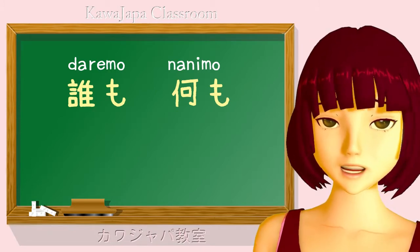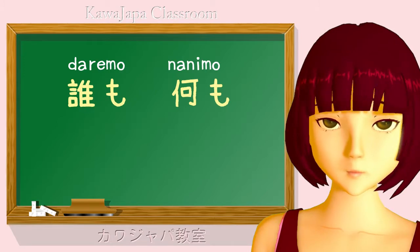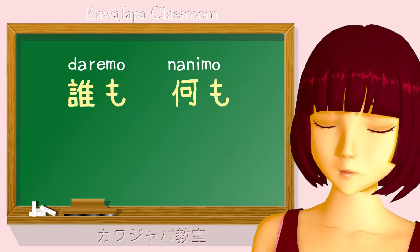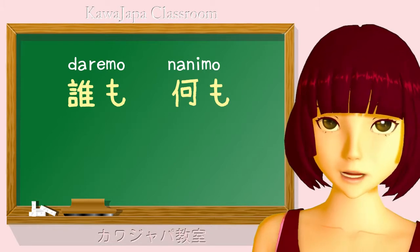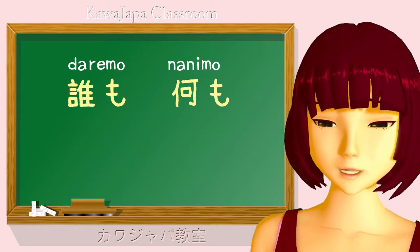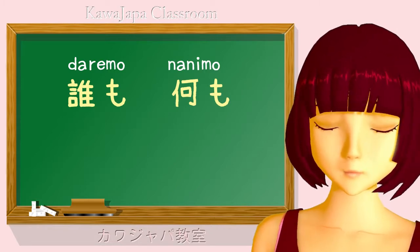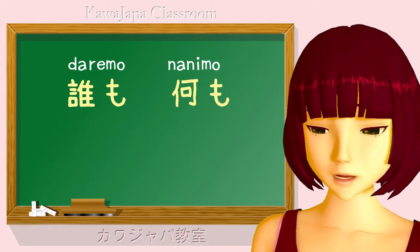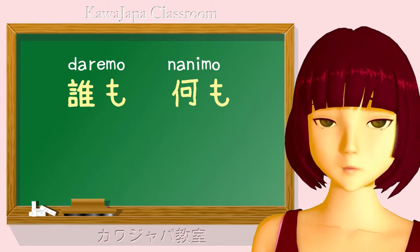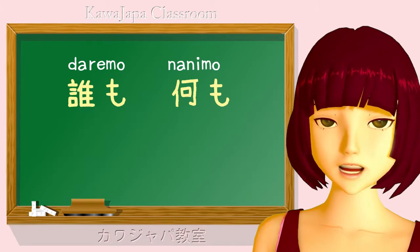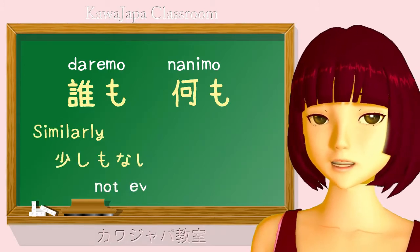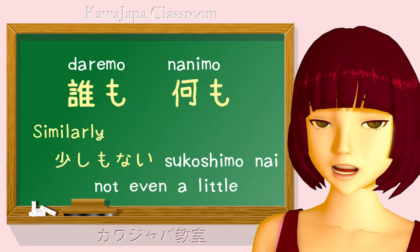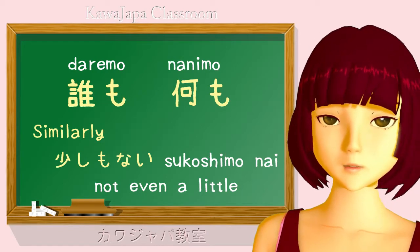The same is true in Japanese. So mo, which means as much as, can also mean even. Looking at daremo and nanimo — the dare here is like dareka, someone, and the nani is like nanika, something. So when we say daremo inai, we're saying not even someone — no one. Nani mo nai — not even something — nothing.